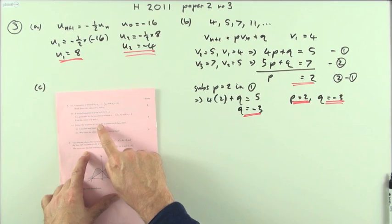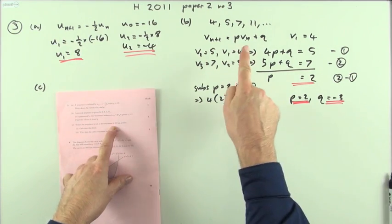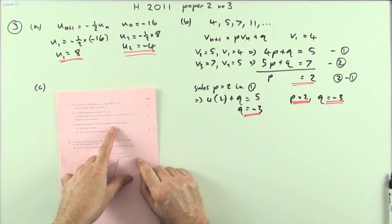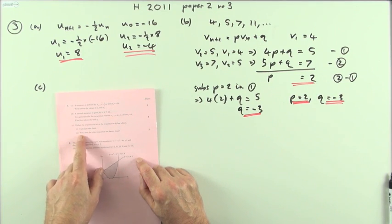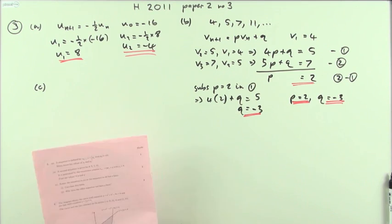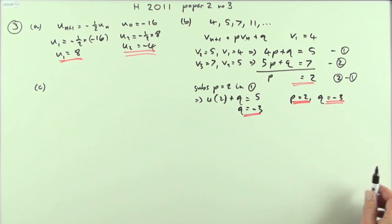Part C. Either the sequence in A, that's the U, or the sequence in B has a limit. Calculate this limit. And secondly, why does the other sequence not have a limit? Well, that's easy to answer straight away.